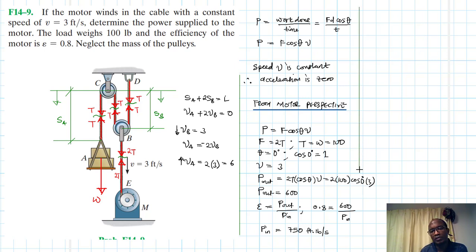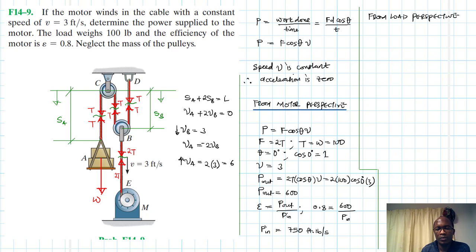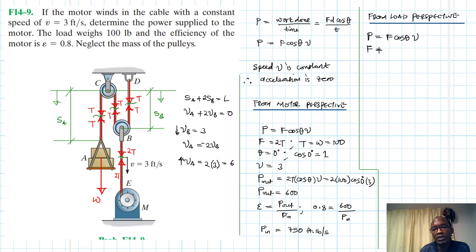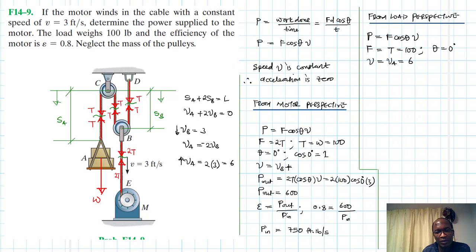Now let's solve from the perspective of the load — Approach two. Power equals F cosine theta times v. From the load's perspective, F equals T, which equals 100 pounds. Theta equals 0 degrees. The velocity v equals V_A, which we found to be 6 ft/s.